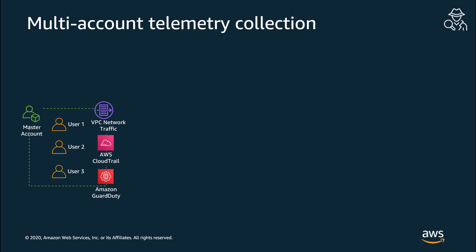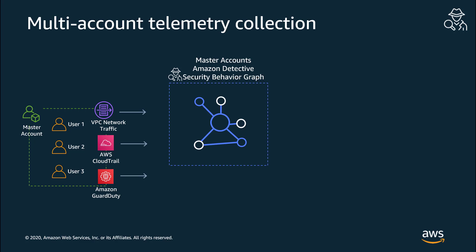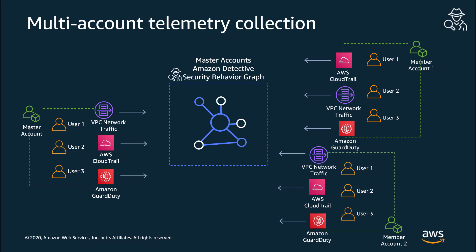Detective is a multi-account service. When you enable Detective using a designated master account, a security behavior graph is created to hold log summaries and analytics for all of your accounts. The master account can then invite member accounts, and once they accept their invitations, the CloudTrail management events, VPC network traffic, and GuardDuty findings for all of these accounts flow into the same security behavior graph created for the master.